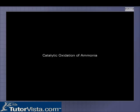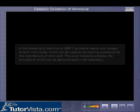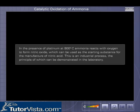Catalytic Oxidation of Ammonia. In the presence of platinum at 800 degrees Celsius, ammonia reacts with oxygen to form nitric oxide, which can be used as a starting substance for the manufacture of nitric acid. This is an industrial process, the principle of which can be demonstrated in the laboratory.